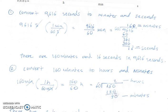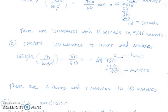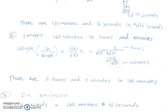The next step is to convert 160 minutes to hours and minutes. We take the original measurement of 160 minutes and multiply by a conversion factor to go from minutes to hours. We put the minutes in the denominator so that the minute units will cancel. Then we'll have 160 times 1 divided by 60.